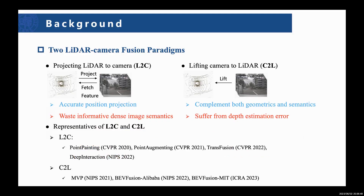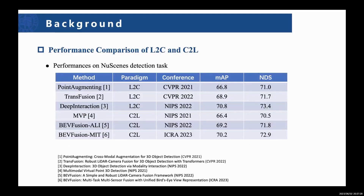Existing LiDAR-camera fusion methods can be roughly categorized into two paradigms. The first projects LiDAR points to camera images and collects useful RGB semantics for enhancement — we call it L2C. The second lifts camera pixels to the LiDAR frame with the help of depth estimation — we call it C2L. Compared with C2L methods, L2C has more accurate position projection but lacks informative dense image semantics due to the sparsity of LiDAR points. The two paradigms perform competitively, while L2C is more popular recently because it is convenient to process LiDAR and camera signals in a shared BEV space.